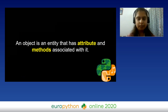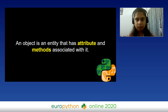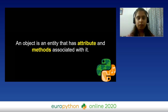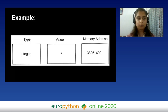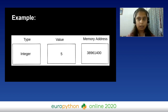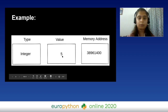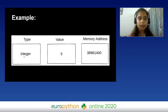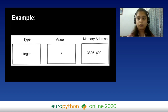An object is an entity that has attributes and methods associated with it. Based on different data types, the attributes and methods can be different. However, each data type has these three things in common: type, value, and memory address. In our example, the value is 5, so the type of our object is integer. As this object is stored somewhere in memory, the unique number you see here tells us the location — this is termed the memory address.